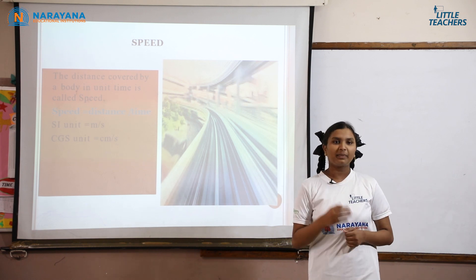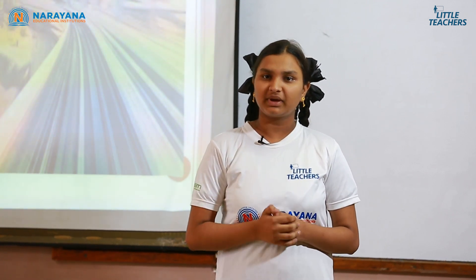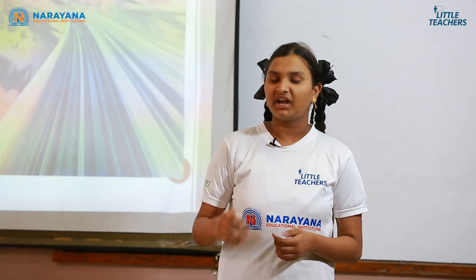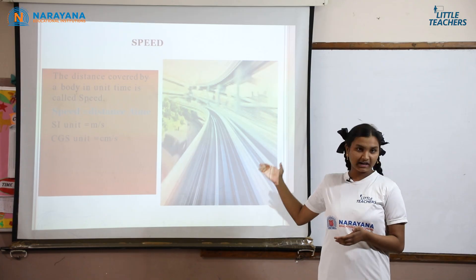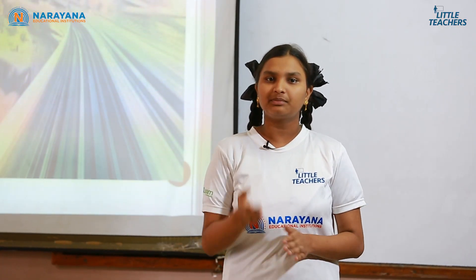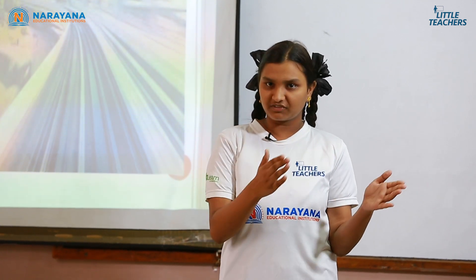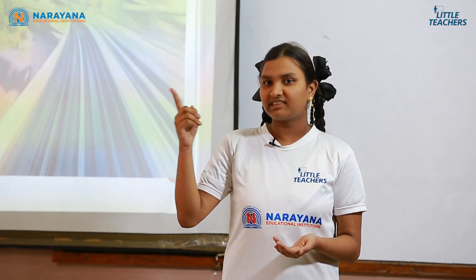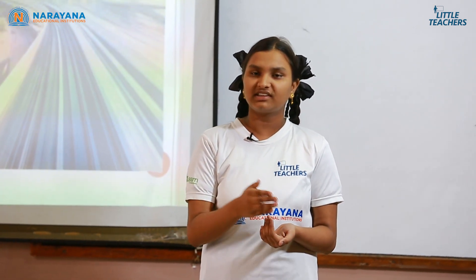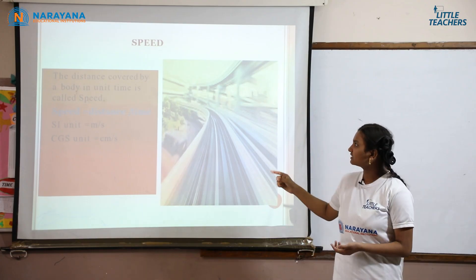Next, coming to our main topic, speed. Speed is the distance covered by a body in unit time. The formula to measure speed is distance divided by time, written as V = S/T, meaning speed equals distance by time. The SI unit of speed is meter per second and the CGS unit of speed is centimeter per second, because speed equals distance divided by time.